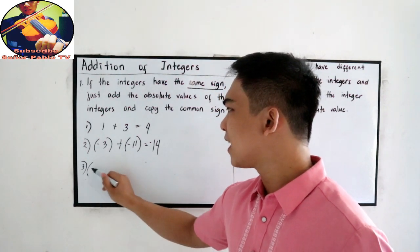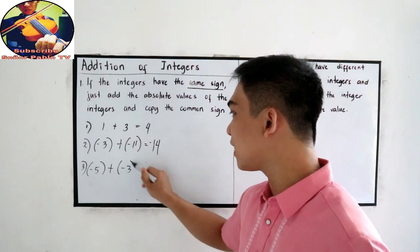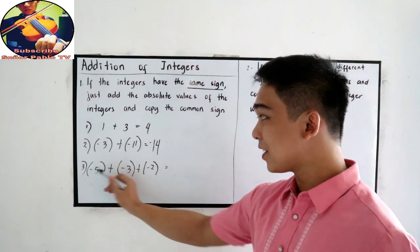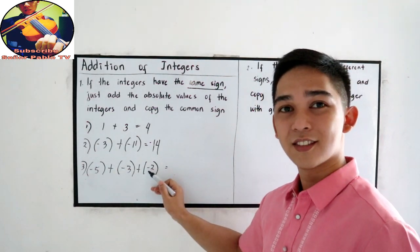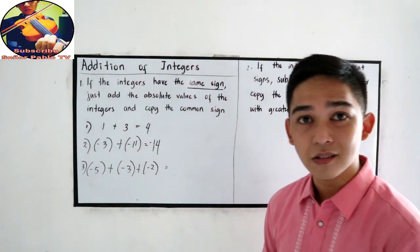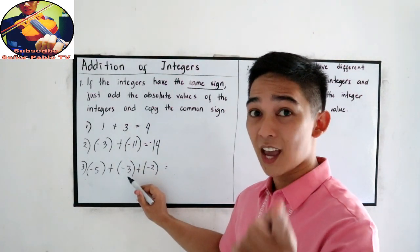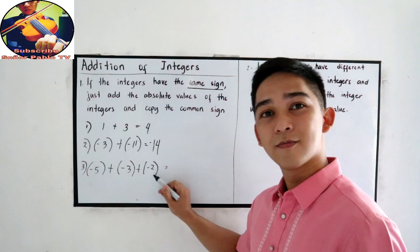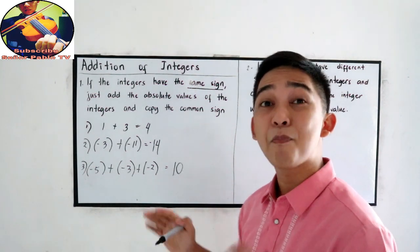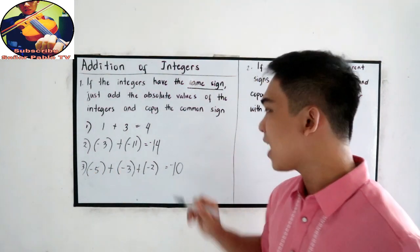Number three: negative five plus negative three plus negative two. Negative, negative, negative — they are all the same sign. So just add the numbers: five plus three is eight, plus two is ten. After adding the numbers, copy their sign. Their common sign is negative, so the answer is negative ten.